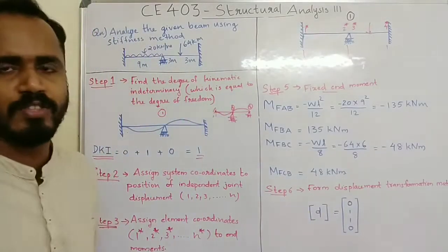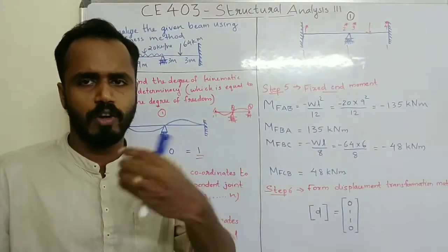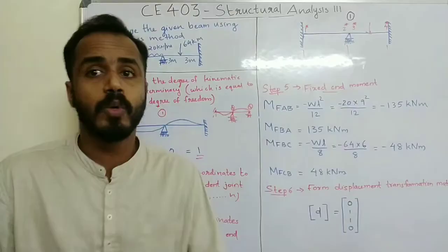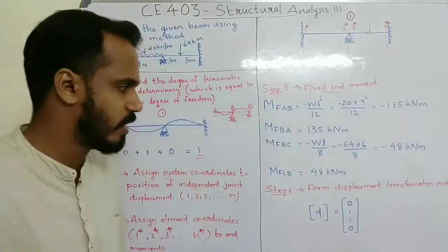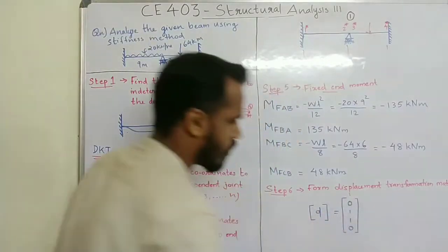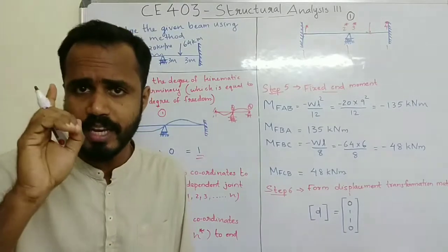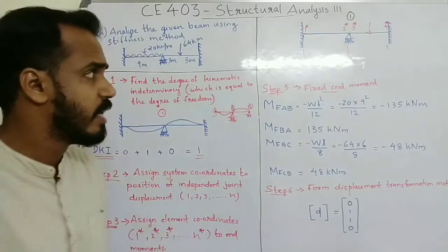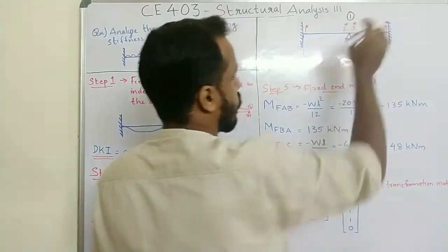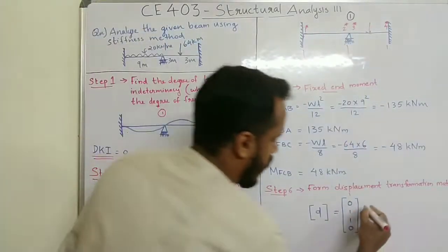Step 6: Form the displacement transformation matrix. To form this matrix, apply a unit displacement to each system coordinate. With 1 system coordinate, we have 1 column. The number of element coordinates is 1*, 2*, 3*, 4* — giving 4 element coordinates and therefore 4 rows.